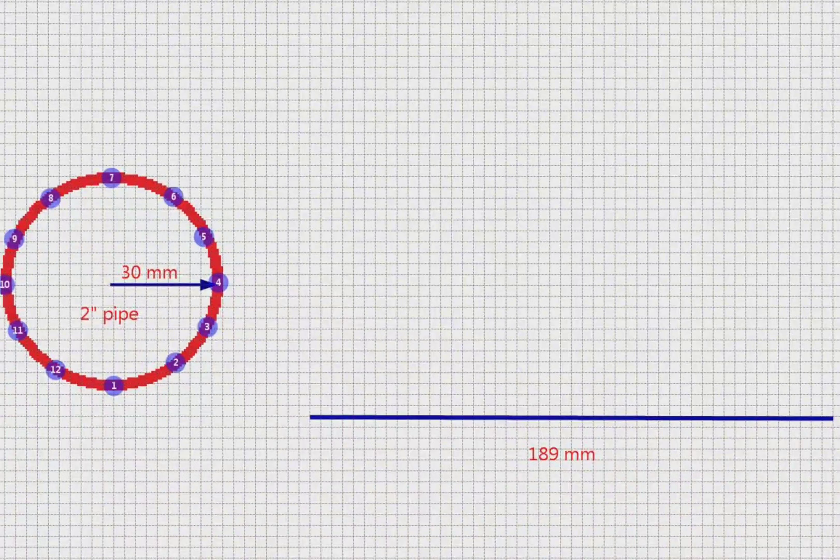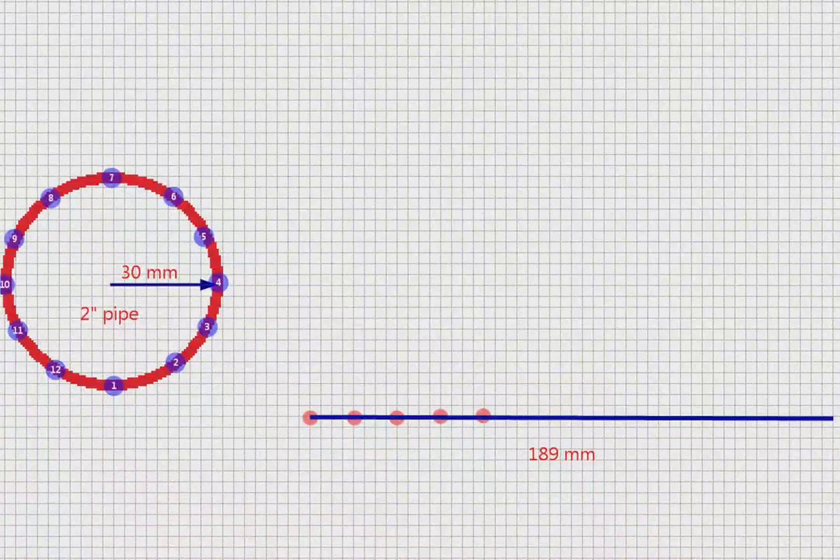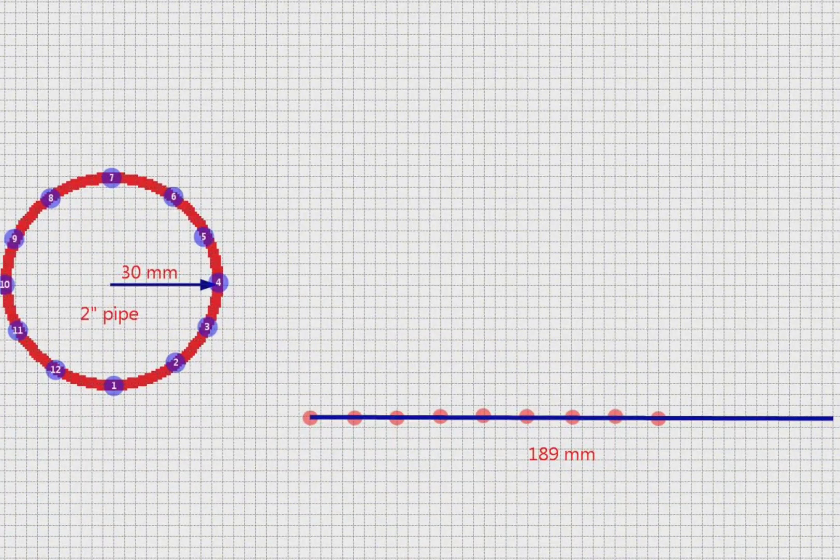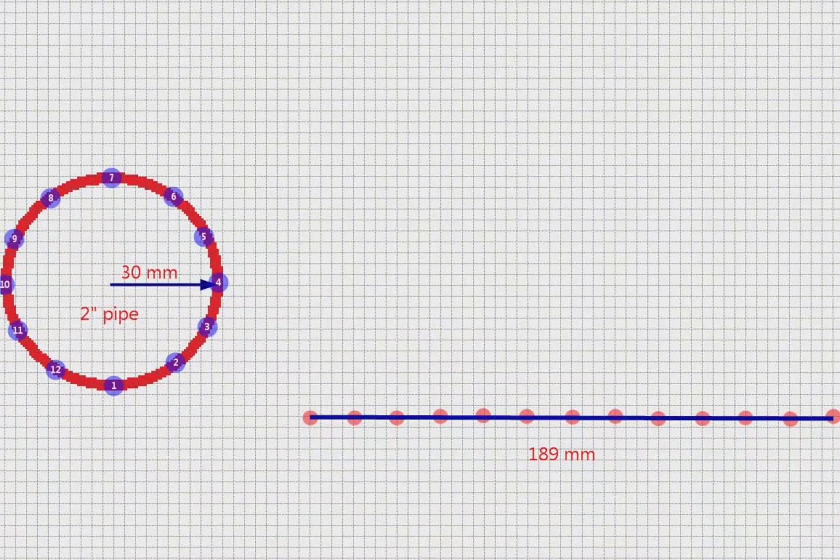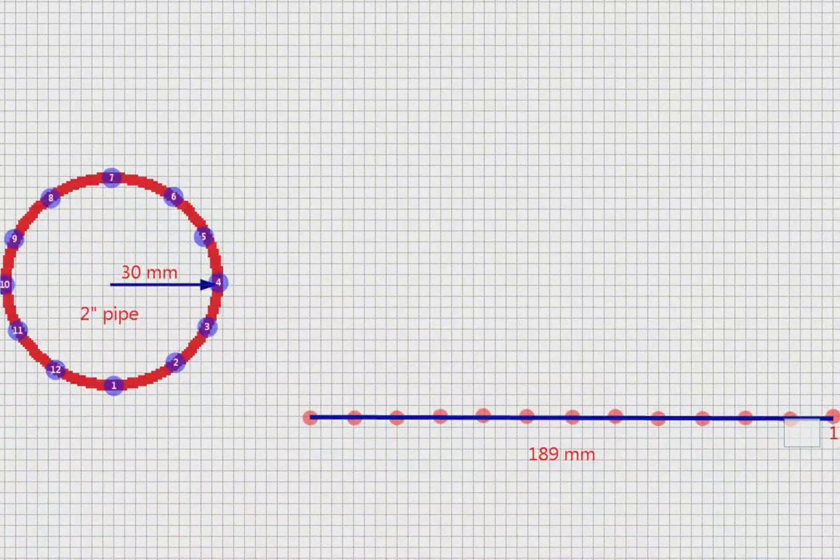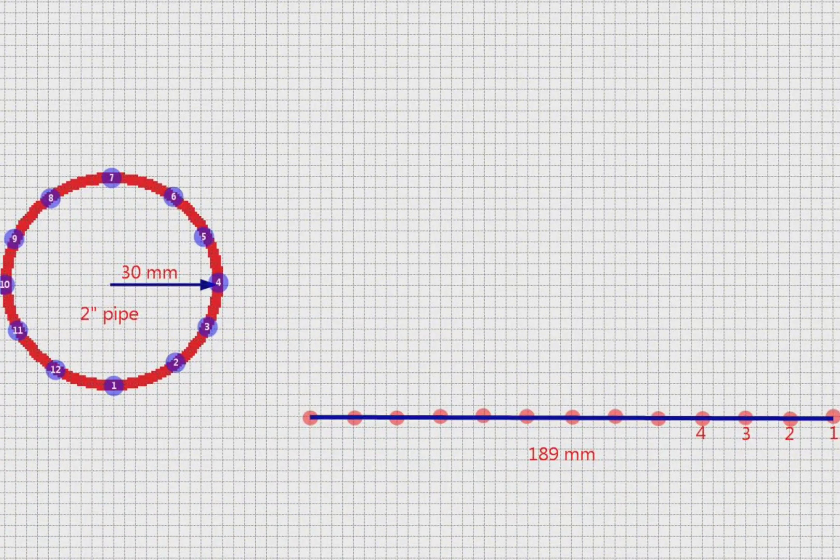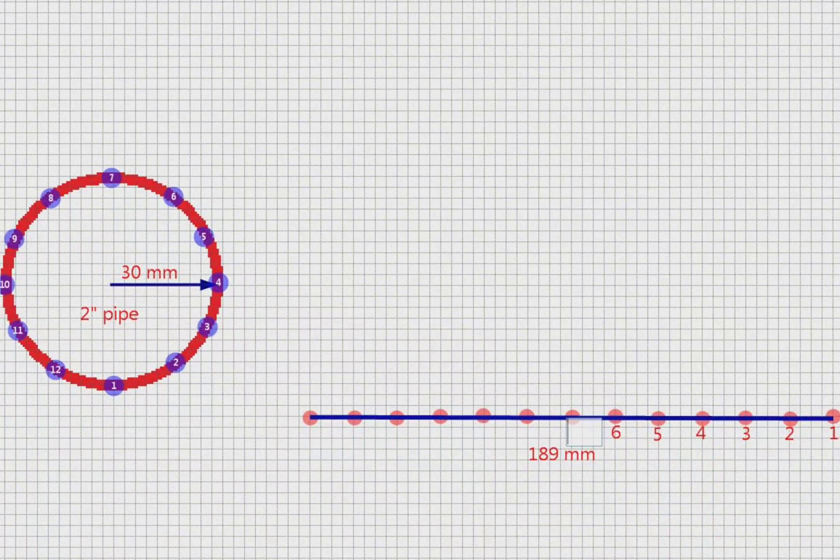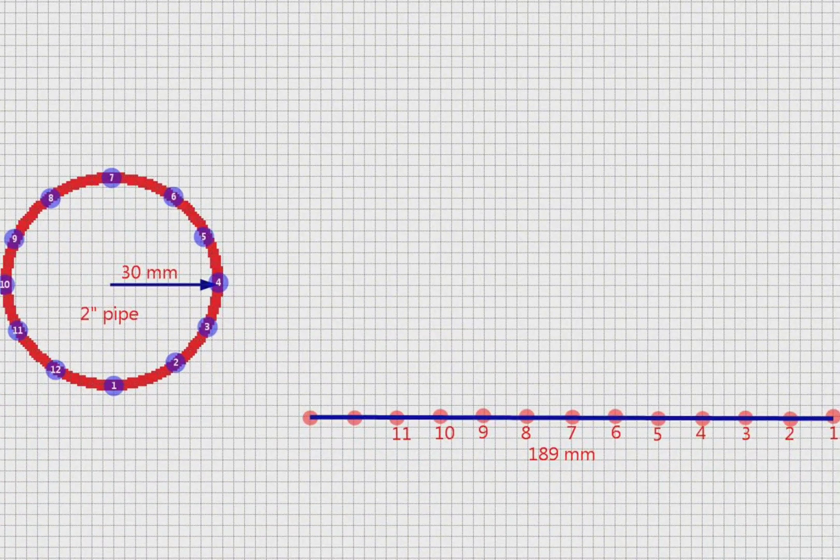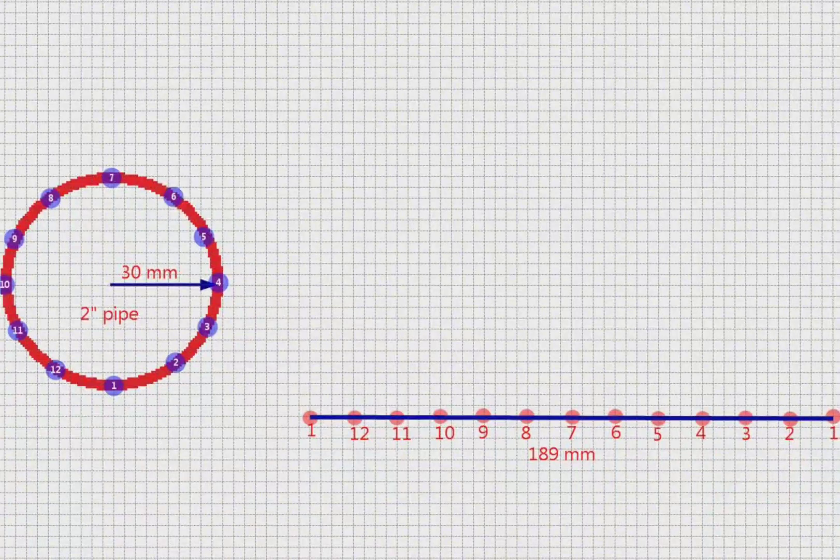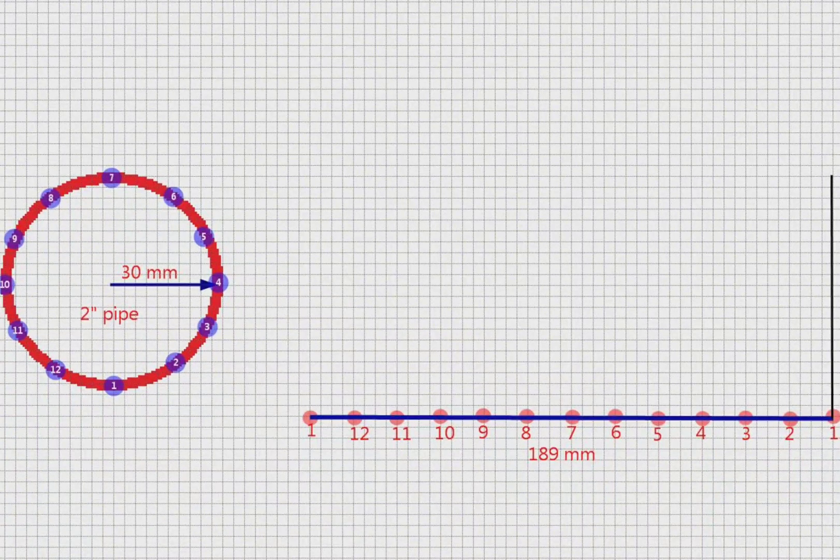Then we divide this straight length into 12 equal pieces as well and we mark with numbers from 1 to 12. We draw vertical lines from the points we marked on this straight line.